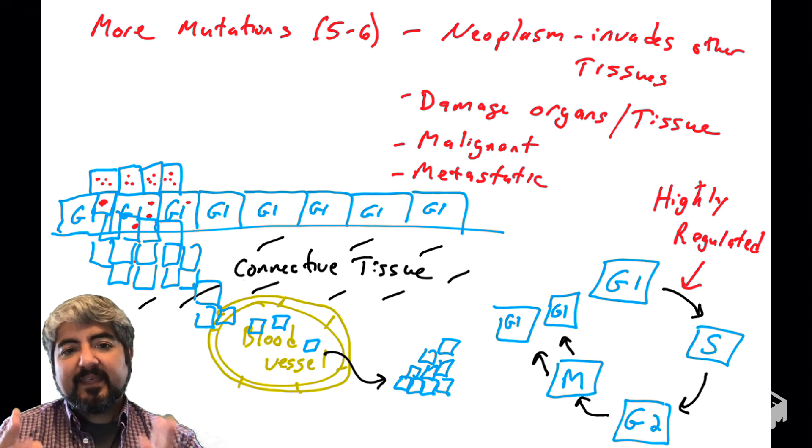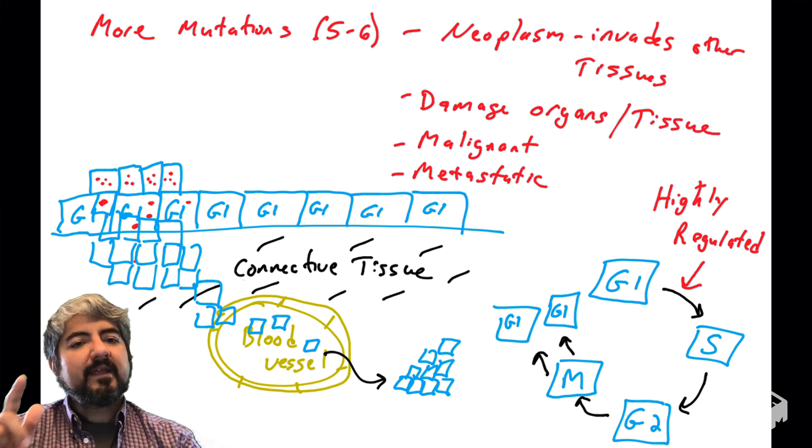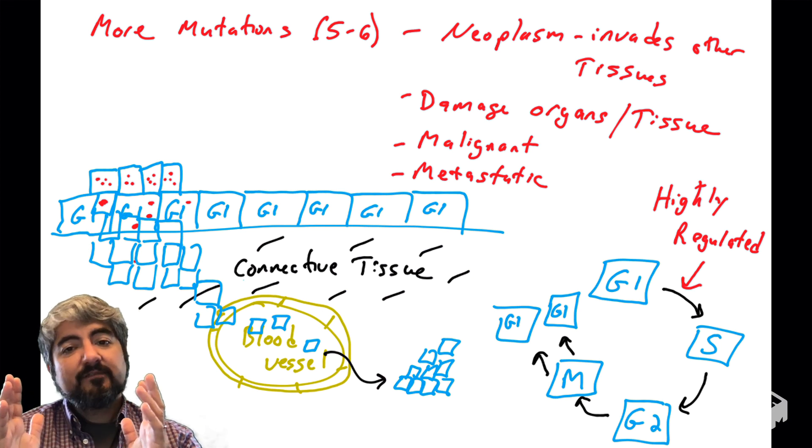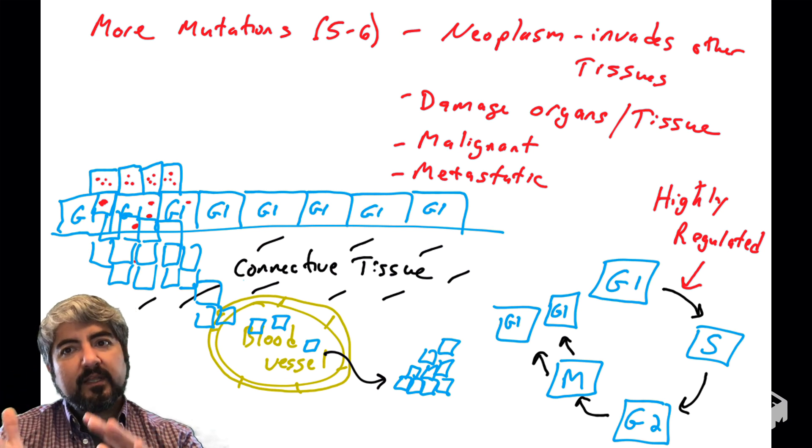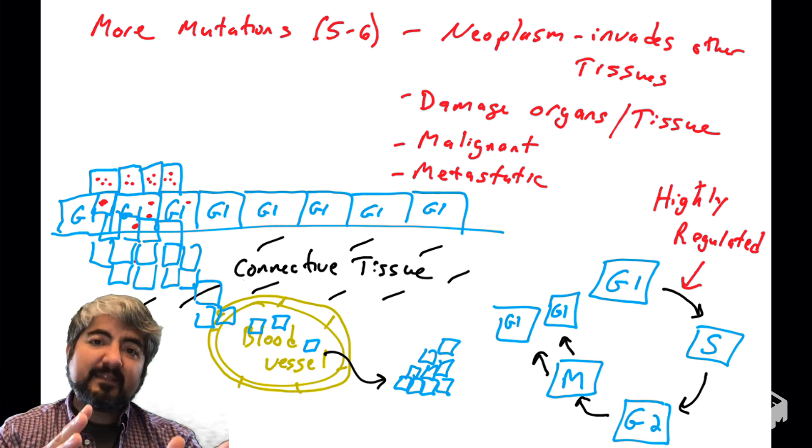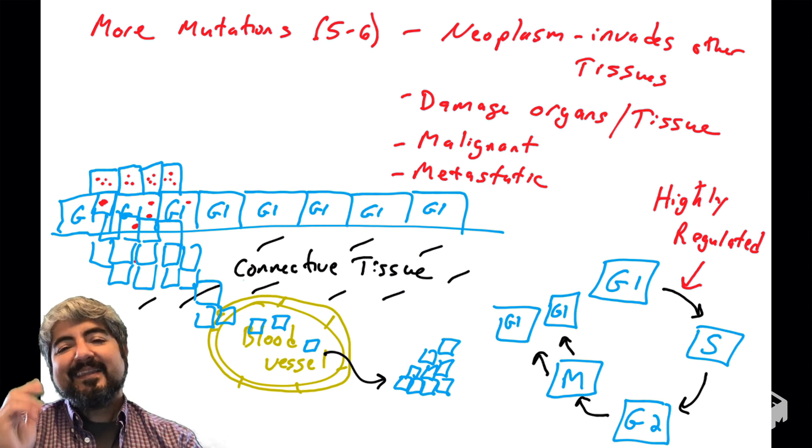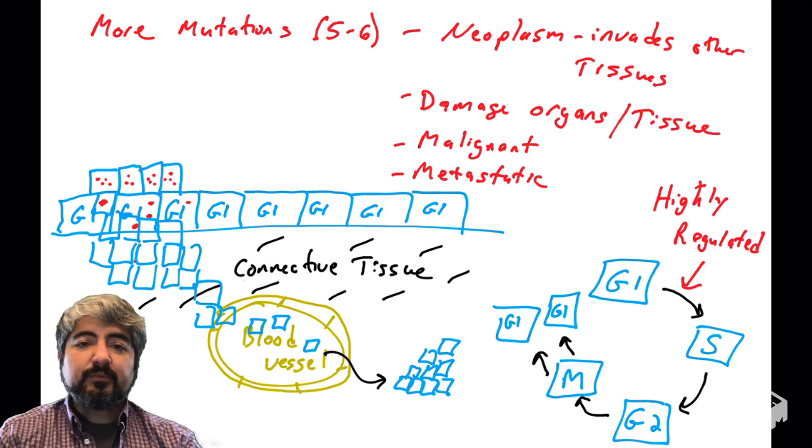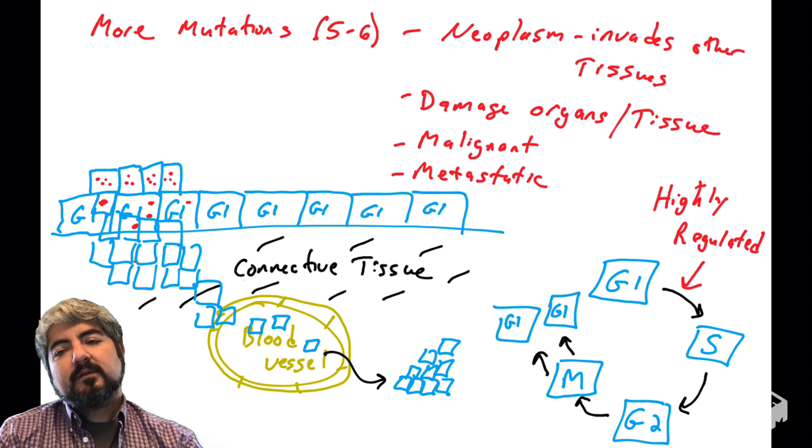So when you're thinking about cancer, I just want you to think about the cell cycle, and we'll talk about how it's regulated. We'll learn many different categories of genes. Just think about are these genes promoting the cell cycle, or stopping the cell cycle, or involved in cell death. And then think about the fact that you need a number of mutations to occur for the cell to really become cancerous.